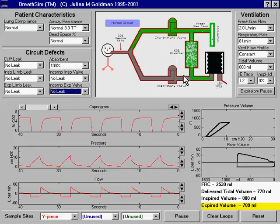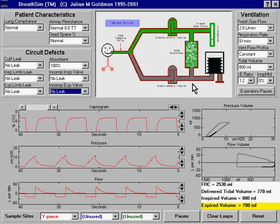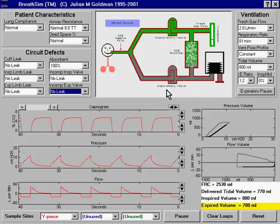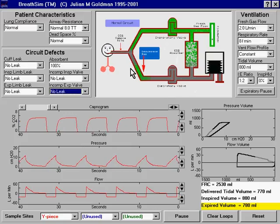What prevents the ventilator bellows contents from going backward down the expiratory limb? Well, that's the expiratory valve, of course.